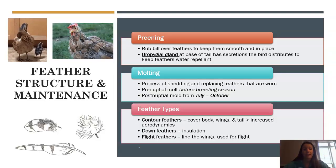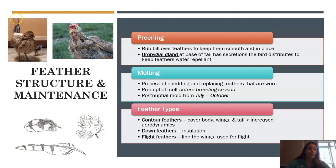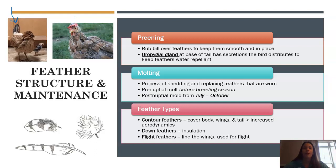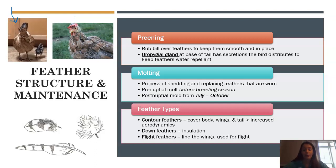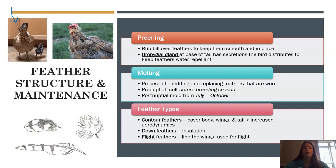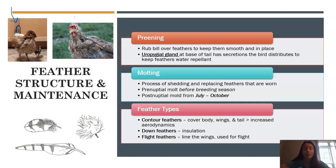Structure and maintenance is really important to birds — they spend a lot of time taking care of their feathers. They do something called preening, which you can see in this picture of a mother hen and her baby. This helps keep their feathers smooth and in place. Birds also have a uropygial gland at the base of their tail with an oily secretion — they put their beak there and then rub it over their other feathers to keep them water repellent. Birds also molt — losing feathers, similar to shedding — typically twice: right before breeding season so they have beautiful feathers to find a mate, and also after mating.